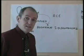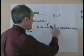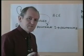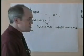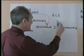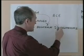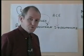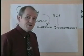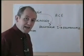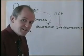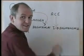Angiotensin 1 is converted into angiotensin 2 by an enzyme called angiotensin converting enzyme, and this takes place as the blood passes through the lungs. The angiotensin converting enzyme is produced in the linings of the blood vessels in the lungs. You may have come across drugs called angiotensin converting enzyme inhibitors — ACE inhibitors — which work by inhibiting the activity of the angiotensin converting enzyme.